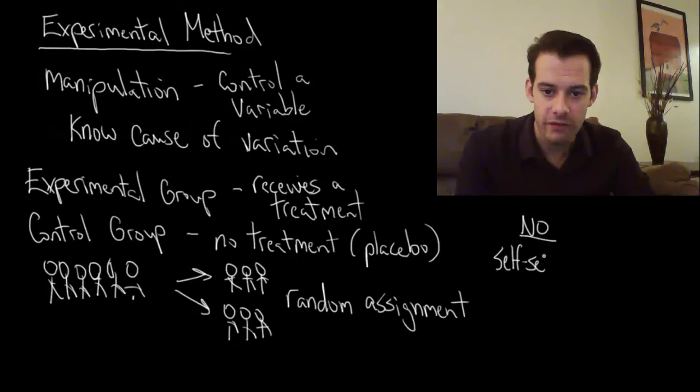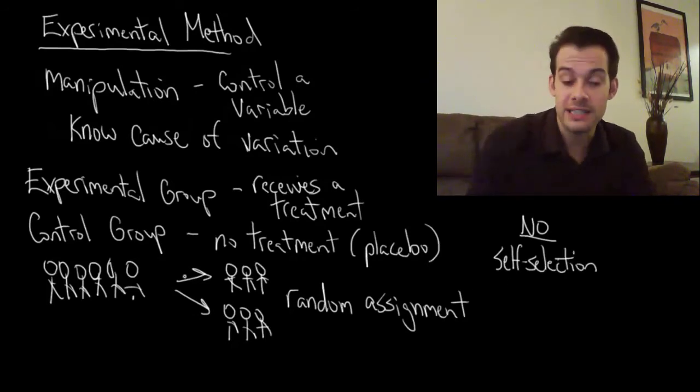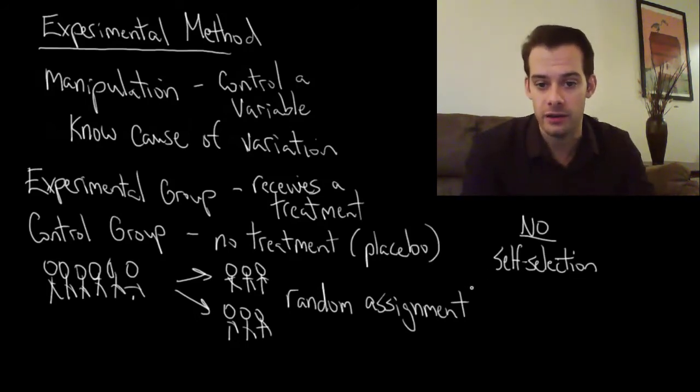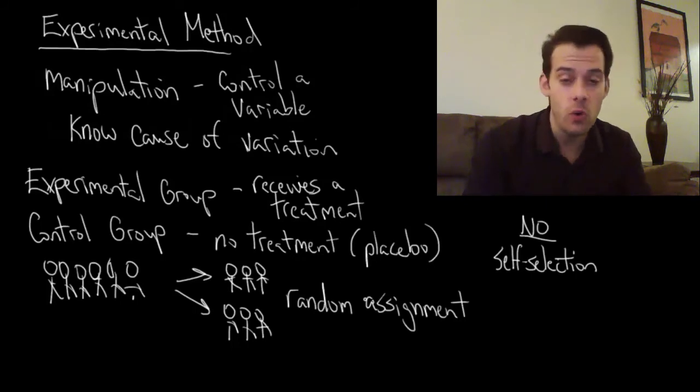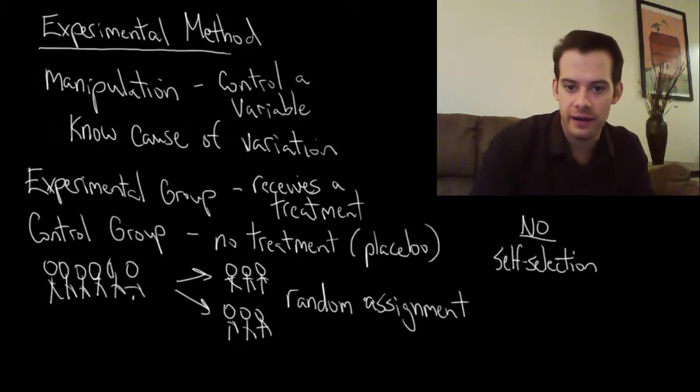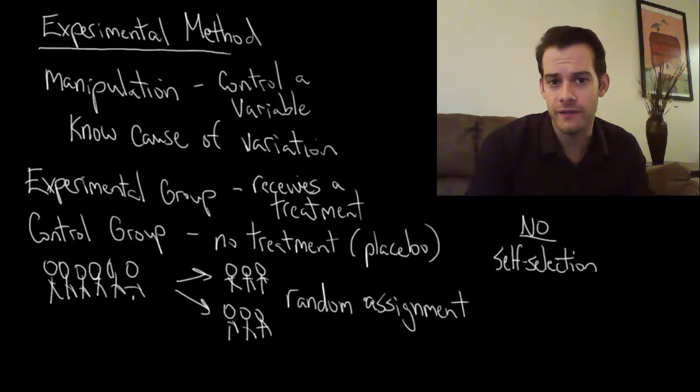The first thing we want to avoid is self-selection. This is where something about the participants causes them to choose one group or another. For instance, if I asked my students who wants to be in the experimental group and study for three hours and who wants to study for zero hours, well now the students who are under more pressure might choose the three-hour group, or the students who are drinking more coffee or something. And now that third variable problem I had before is back. Now that caused them to choose the group they're in, so I don't want any sort of self-selection.